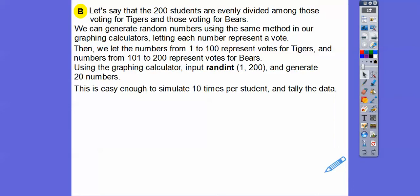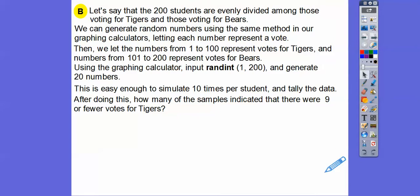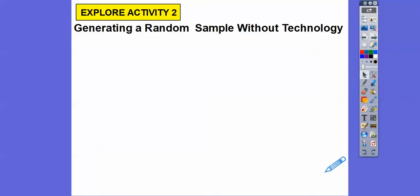So after doing this, how many of the samples indicated that there were nine or fewer votes for the tigers? And so that would be an exercise you guys would do in class. And because each class would be different, I can't do that with you guys. So it just depends on the class. So check your classmates' results and see what the results are. It might even be the bears or the tigers win, you know, if they're even.